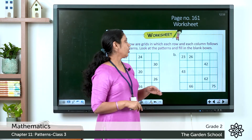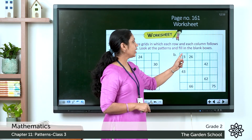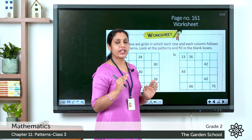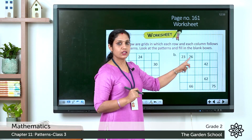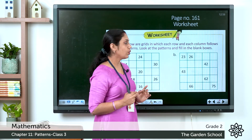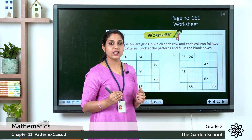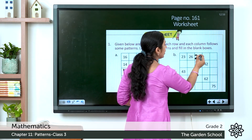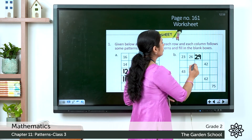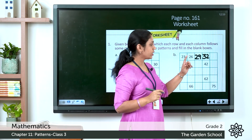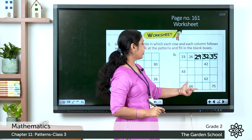In grid (b), the numbers increase horizontally: 23, 26 — increasing by 3. So 26 plus 3 is 29, then 29 plus 3 is 32, then 32 plus 3 is 35. Likewise complete the rest of the grid.